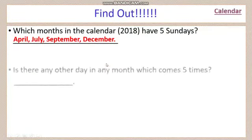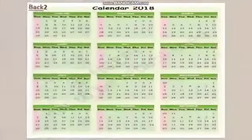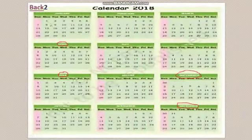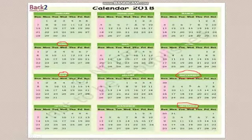Is there any other day in any month which comes 5 times? Yes — you can see Tuesday, Wednesday also 5, then Thursday, Friday, and Saturday also appear 5 times in some months.